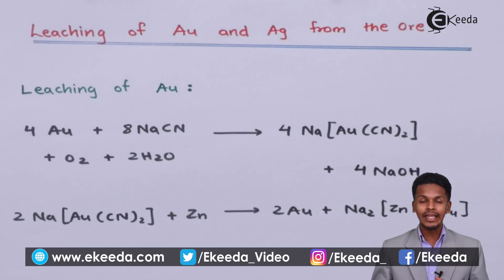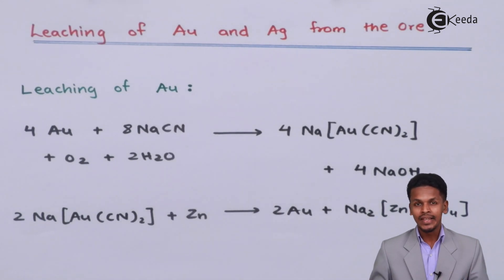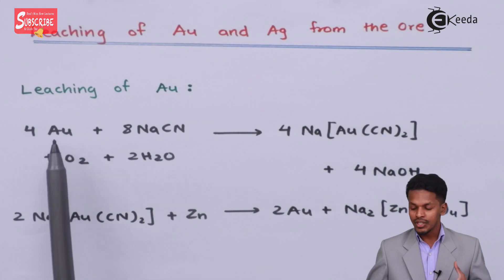Friends, in this topic I am going to talk about the leaching of silver and gold from their ores. Starting with the first one, that is leaching of gold. This leaching is a method to remove the impurity or to remove the insoluble impurity. Suppose if we have impure gold, that is Au.